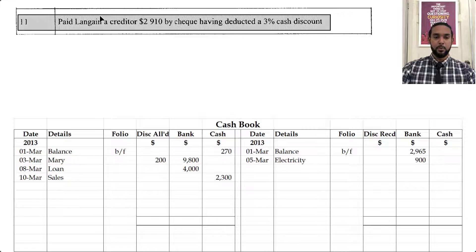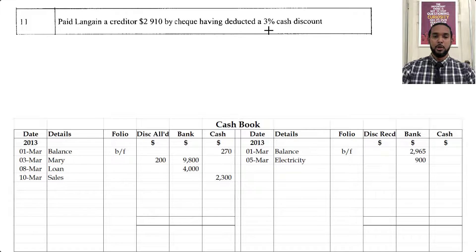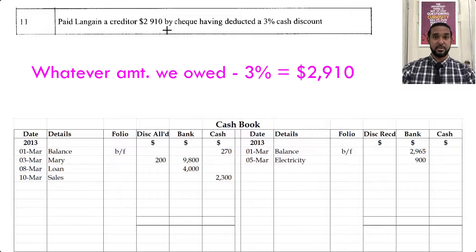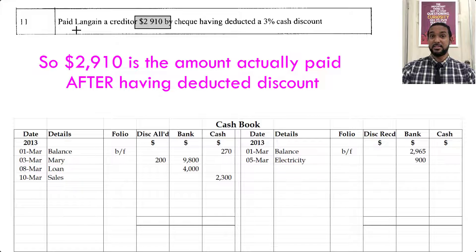On the 11th, we paid Land Gain, a creditor, 2,910 by check, having deducted a 3% cash discount. Some of you might say we just need to find 3% of 2,910 — but that's not what we do. It said we paid Land Gain 2,910 having deducted a 3% cash discount, which means we already deducted the 3% from whatever amount we owed, and that left us with the amount being paid of 2,910. So 2,910 is the amount actually paid after having deducted the discount.